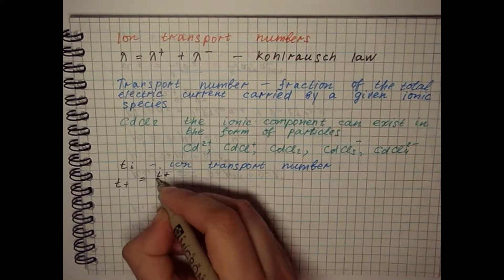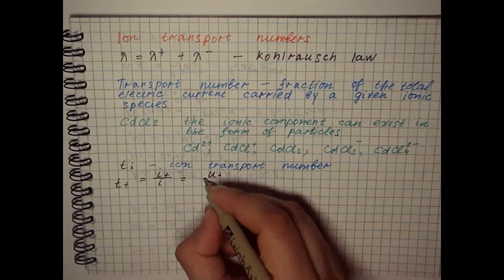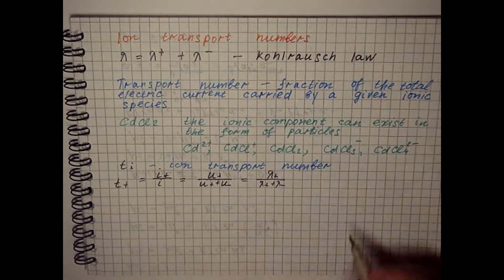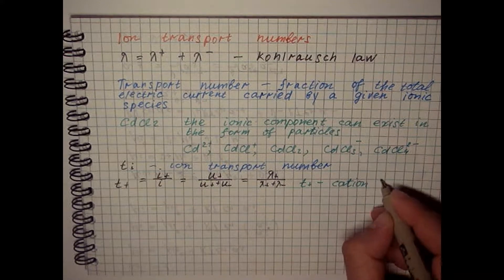That is, the number of gram equivalents of this component transferred in the direction of the cathode or anode when one Faraday of electricity passes through the solution.